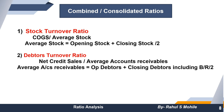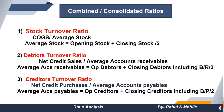Next is debtors turnover ratio. Debtors are always related with sales, specifically net credit sales. The formula is net credit sales divided by average accounts receivables. Average accounts receivables includes two points: debtors and bills receivables. If two years of data is given, calculate average accounts receivables as opening debtors plus closing debtors including bills receivables, divided by two.